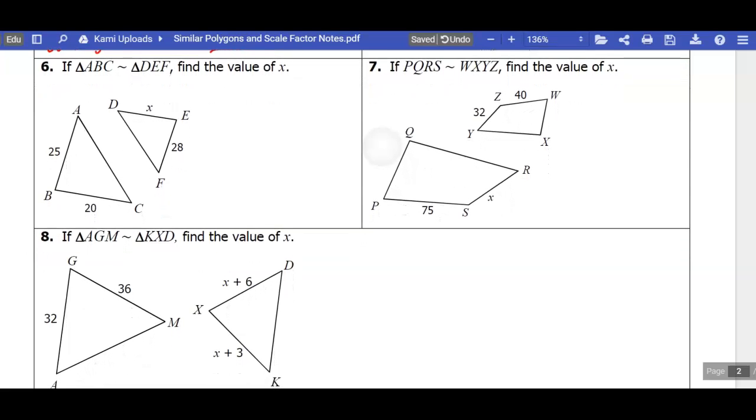For number six, we have triangle ABC is similar to triangle DEF, find the value of x. So what I like to do in these problems is first mark my corresponding angles. So I've got A in the first spot and D in the first spot, so I know that A and D are going to match up because these triangles aren't oriented in the same way, so I want to make sure I match up the right parts.